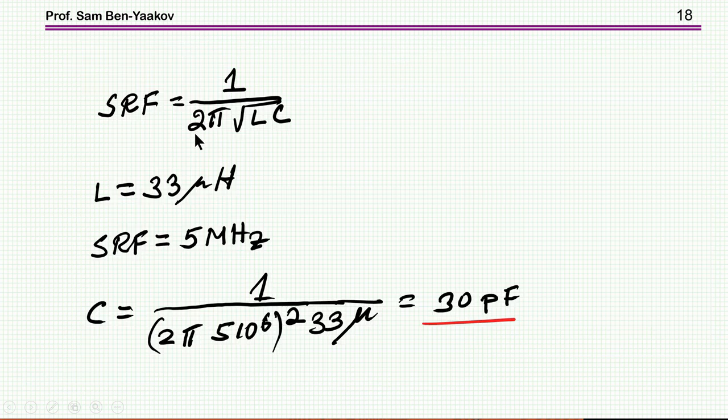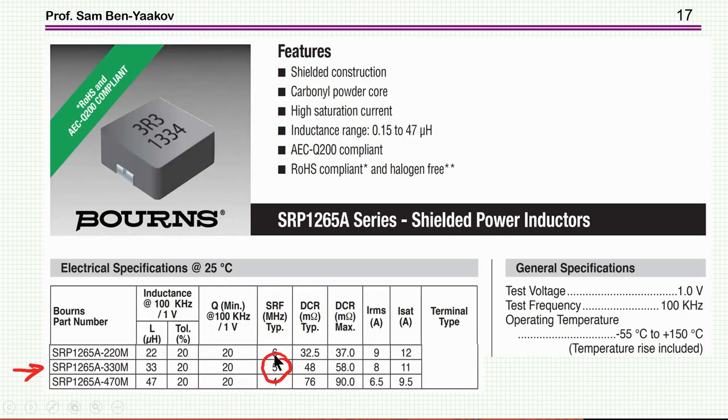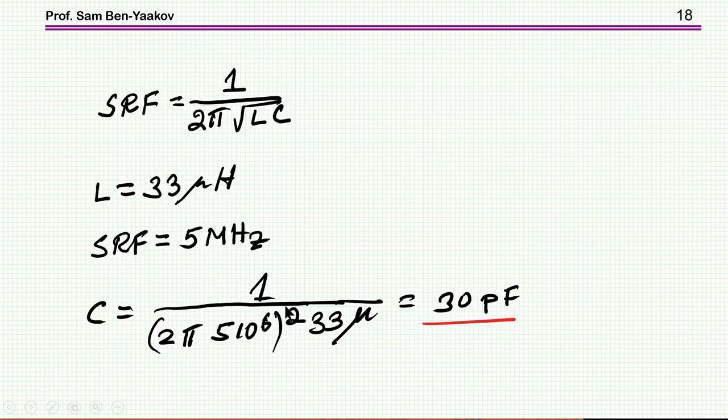So therefore, if this self-resonant frequency is here, we know the inductance, we know the 5 megahertz that's from the table here. So we come up that this capacitance is about 30 picofarad. So this is something we have to take into account.